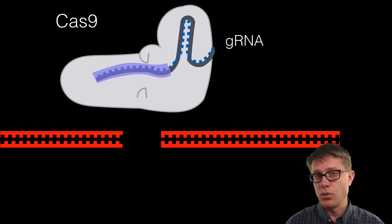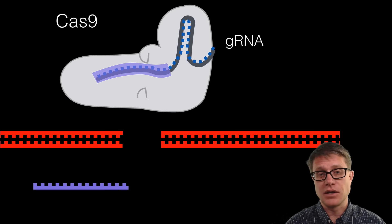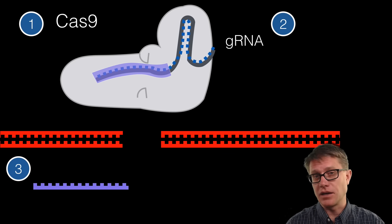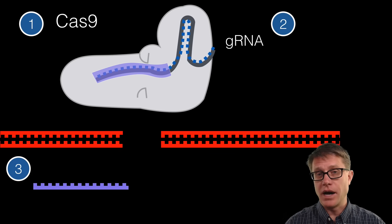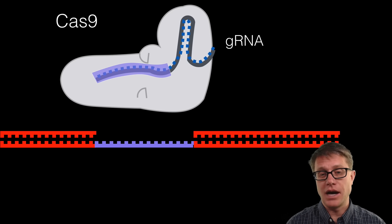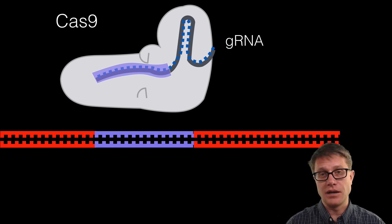Now let us say we want to make this more complex — not only do we want to break a gene, but let us say we want to insert a new gene. The system now has three parts: the Cas9, the guide RNA, and then the host DNA that we want to put in. As we break the DNA, the host DNA is added and then the DNA repairs itself. So essentially we have added a gene to the cell.